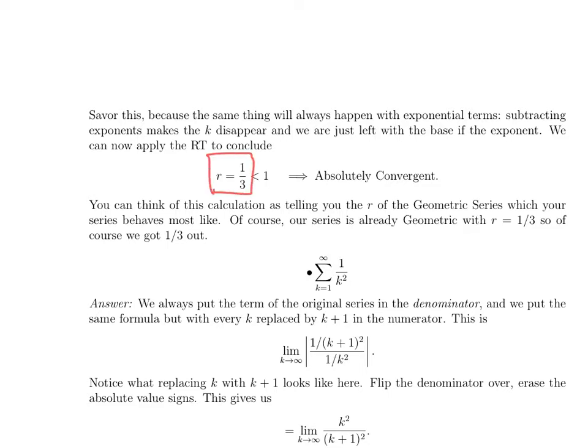That's always going to happen when you have an exponential term anywhere in your expression and you use the ratio test. You're going to end up with an exponential to the k and an exponential to the k plus 1, and the ratio is going to cancel out — you just get one copy of that base. So we get r equals one-third. Since r is less than 1, the series is absolutely convergent. This makes sense since it was a geometric series with r equals one-third.